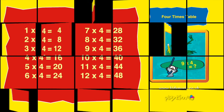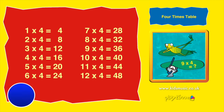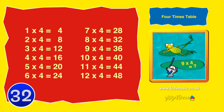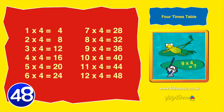Four times four is sixteen. Five times four is twenty. Six times four is twenty-four. Seven times four is twenty-eight. Eight times four is thirty-two. Nine times four is thirty-six. Ten times four is forty. Eleven times four is forty-four. Twelve times four is forty-eight.